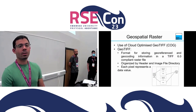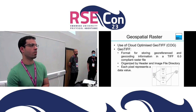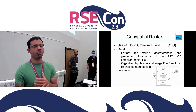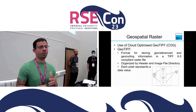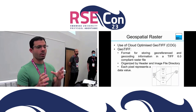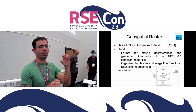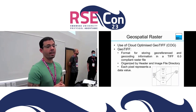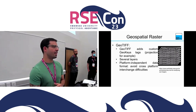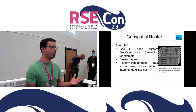For the geospatial raster data, we chose to work with Cloud-Optimized GeoTIFF, COG. The Cloud-Optimized GeoTIFF format comes from the GeoTIFF, and the GeoTIFF format comes from the TIFF. GeoTIFF is a format to store geocode information in a TIFF-compliant raster file. A TIFF file is organized by header and image file directories. In the header you have information about the locations of each part, and each pixel represents a data value. GeoTIFF differs from TIFF in that it includes geospatial tags such as projections.